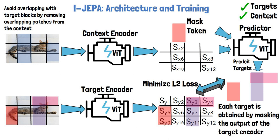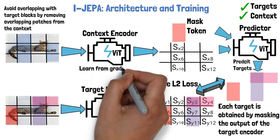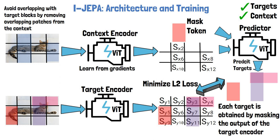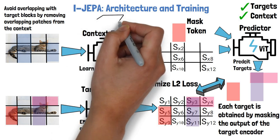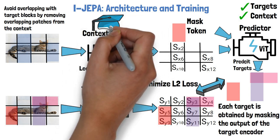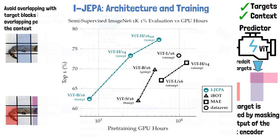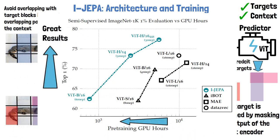The context encoder and the predictor learn from that loss, while the target encoder's parameters are updated using exponential moving average of the context encoder parameters. At the end of training, the trained context encoder is capable of generating highly semantic representations for input images, and the researchers show that using these representations they can achieve remarkable results in downstream tasks.